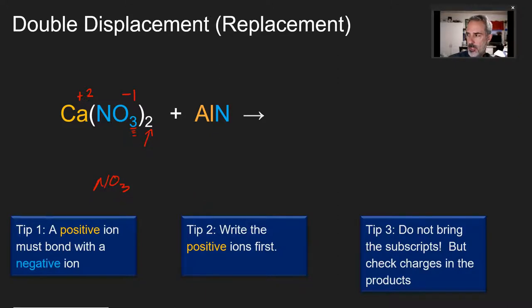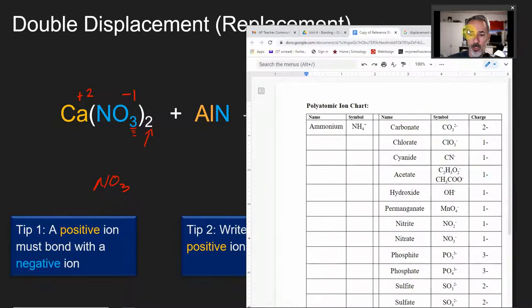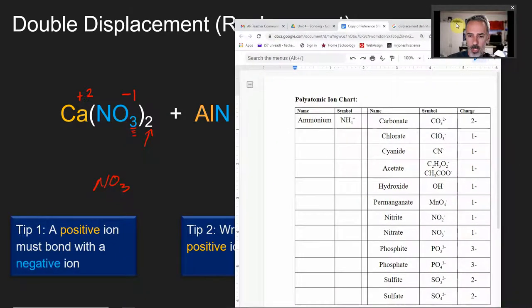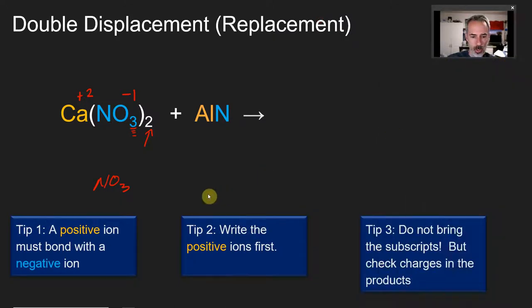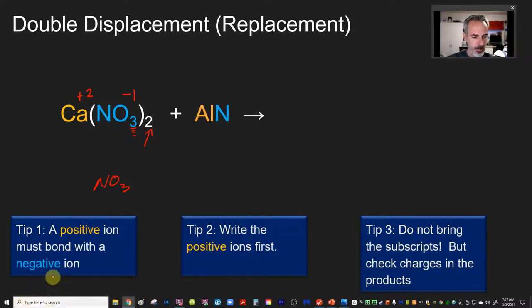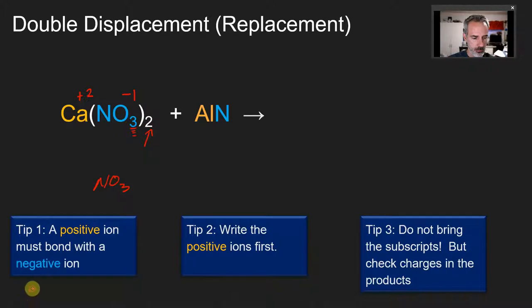Since nitrate's about to get a new partner, we don't want to keep that two, just like we said in the last lesson. But when we swap partners, we're actually going to keep this three. Why? Because it's not there because we checked charges. It's there because the nitrate ion's formula is NO₃, and that's why it's a good idea to have that polyatomic ion chart open. Let me grab mine. Let's see, nitrate is right there, NO₃.